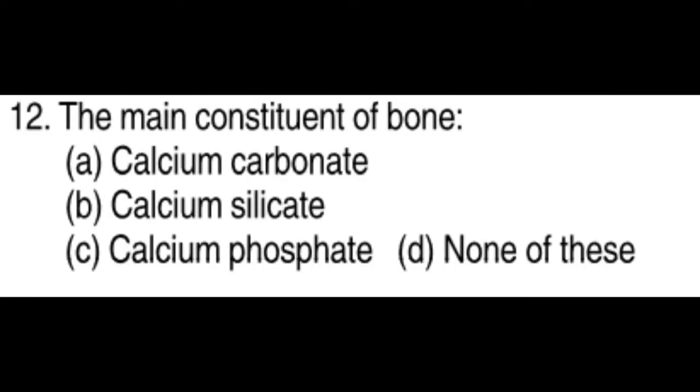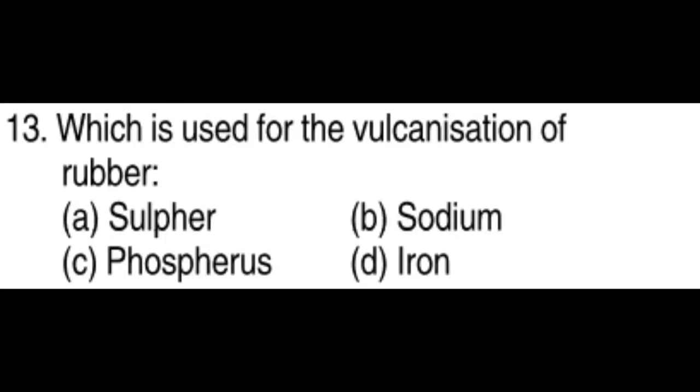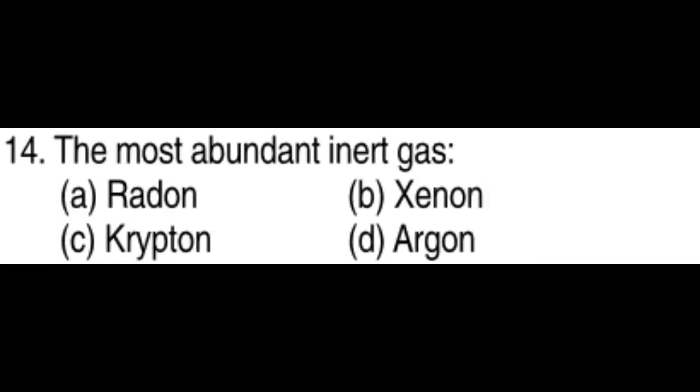The main constituent of bone: Calcium phosphate. Which is used for the vulcanisation of rubber: Sulfur. The most abundant inert gas: